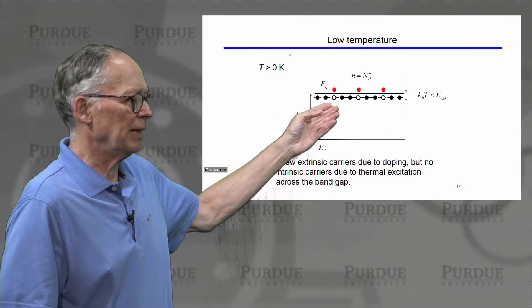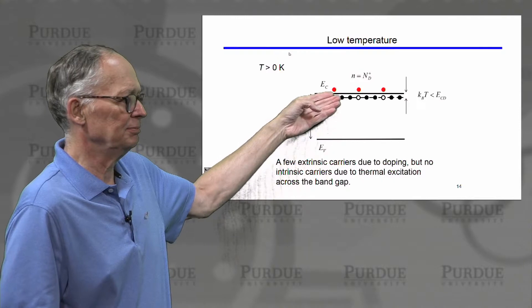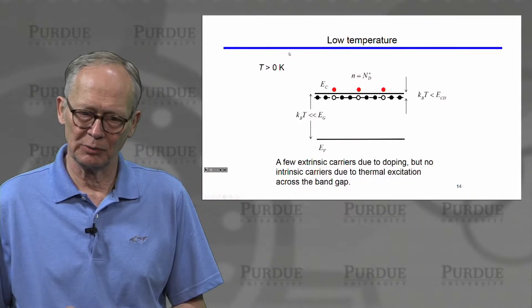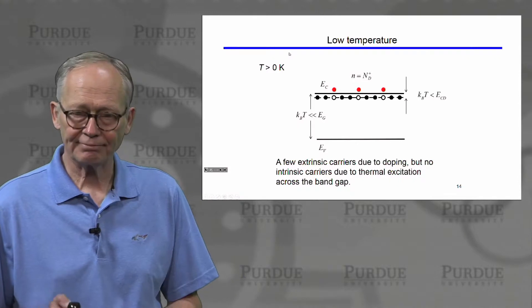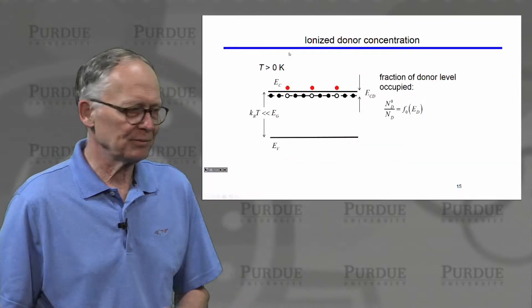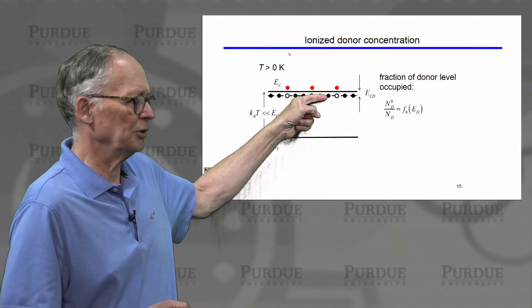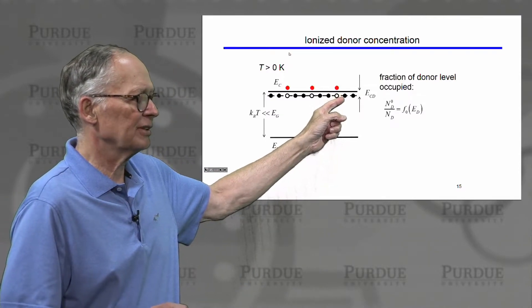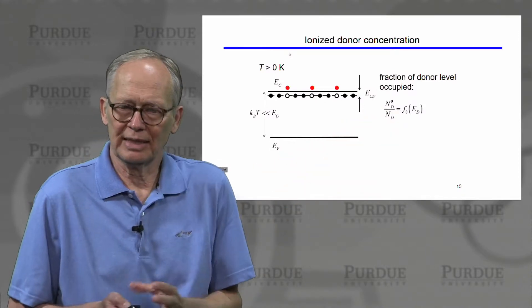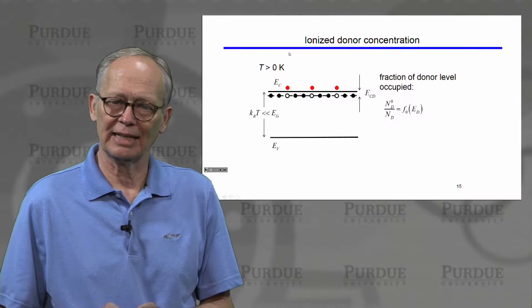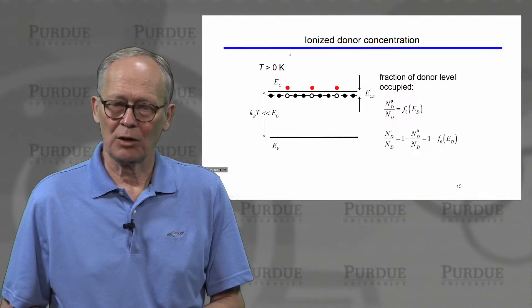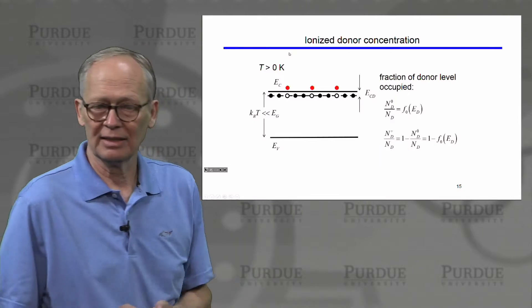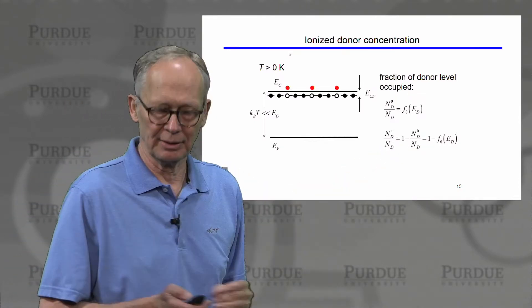At a modest temperature, a few of the bonds of that fifth electron have been broken and we have some electrons in the conduction band, but only some fraction of them. To compute that fraction ND⁺, we might think it is given by a Fermi function, and that would get us close. If an electron is on one of these donor sites, it's occupied. The fraction that are ionized is one minus the fraction that are unionized — that is, one minus the equilibrium Fermi function evaluated at the energy of the donor level.